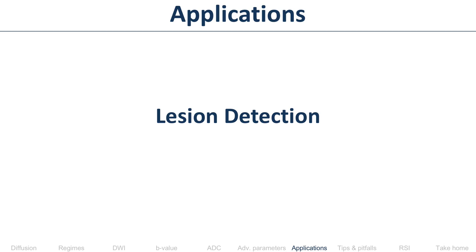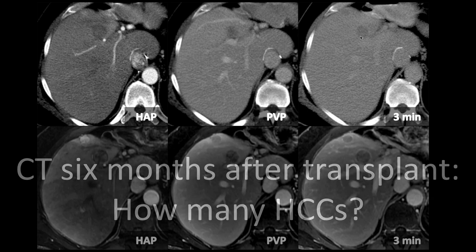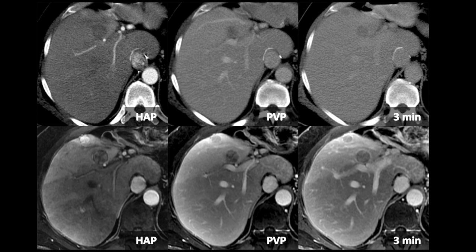So why do we do diffusion-weighted imaging? Mainly for lesion detection. Here's a patient with three HCCs. On CT you can see two of them: hyper-enhancing and washing out. On MRI done one day later, arguably you see those two better. But you only see two — anyone see a third? Once we add diffusion, there it is with the blue arrow. Now you can see it on the arterial phase and washing out on portal venous and delayed phase. I didn't see it until I saw the diffusion.